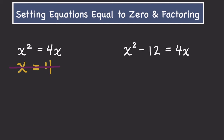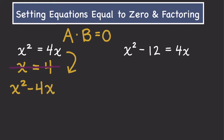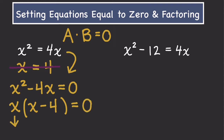Instead, we're going to take advantage of the zero property. As a review, the zero property says that if you have a times b equals 0, then we can conclude that either a, b, or both of those unknowns has to also equal 0. So we're going to set our equation equal to 0 and then factor it to find both solutions. We'll write x² - 4x = 0, factor out x to get x(x - 4) = 0, meaning x = 0 or x = 4.